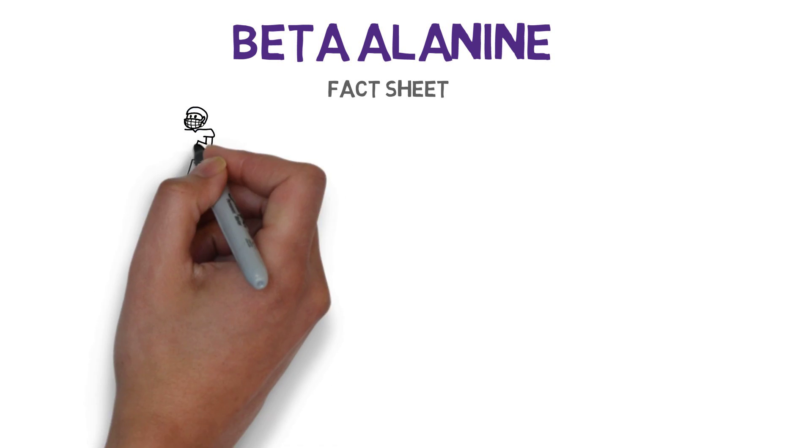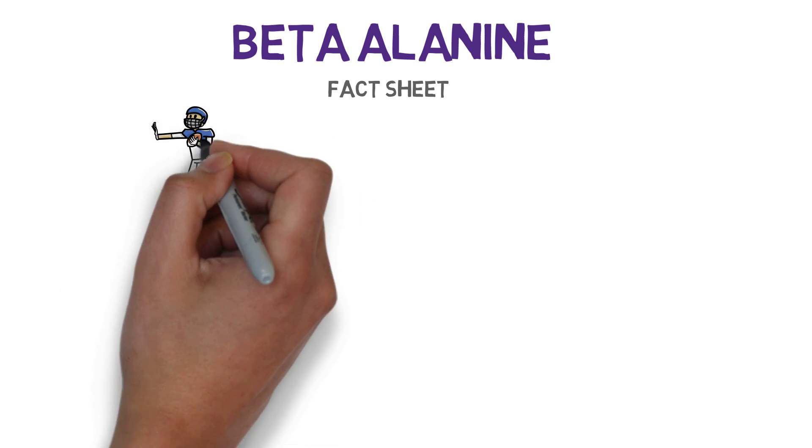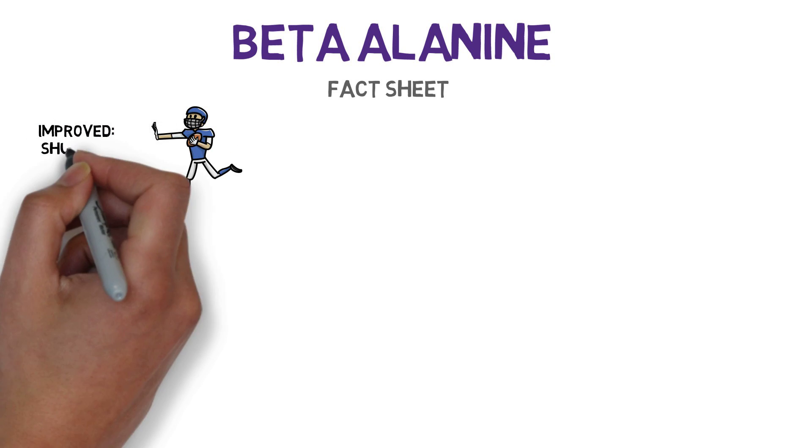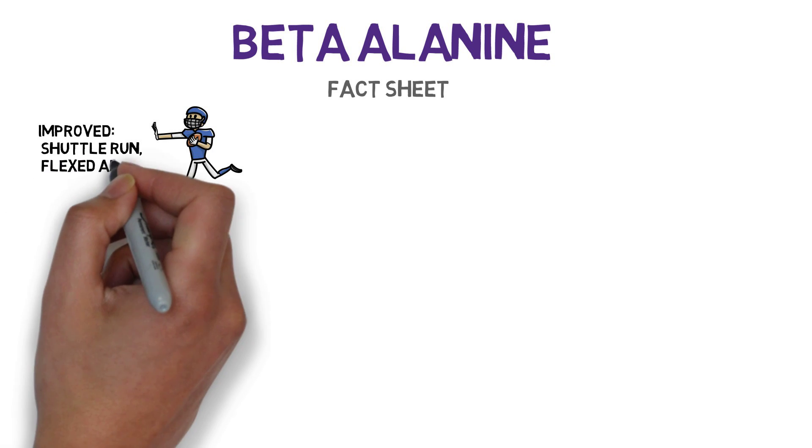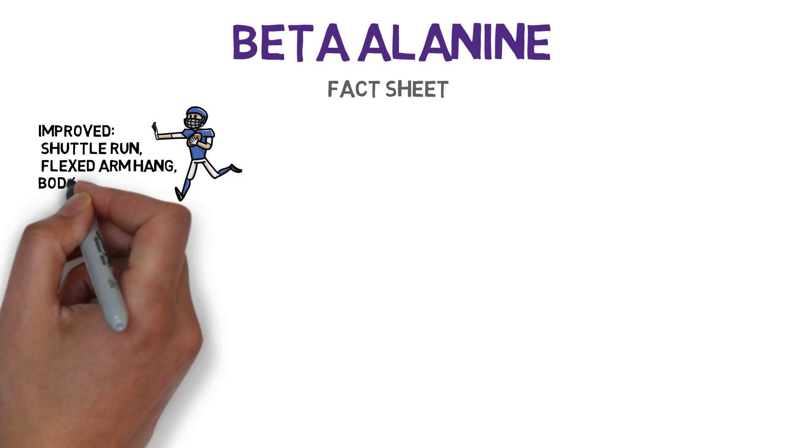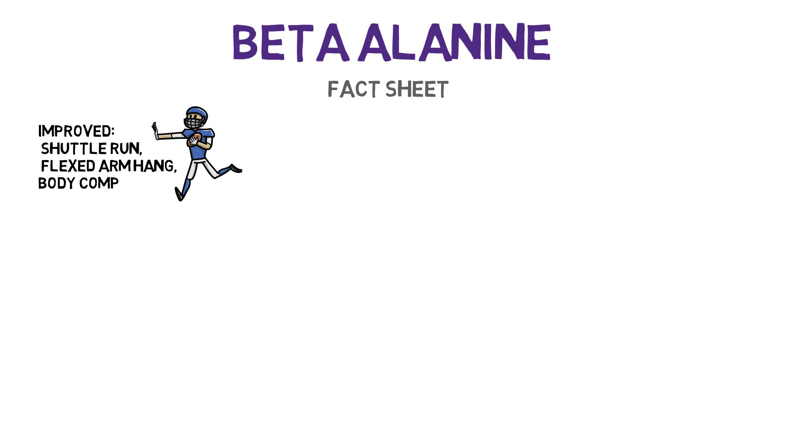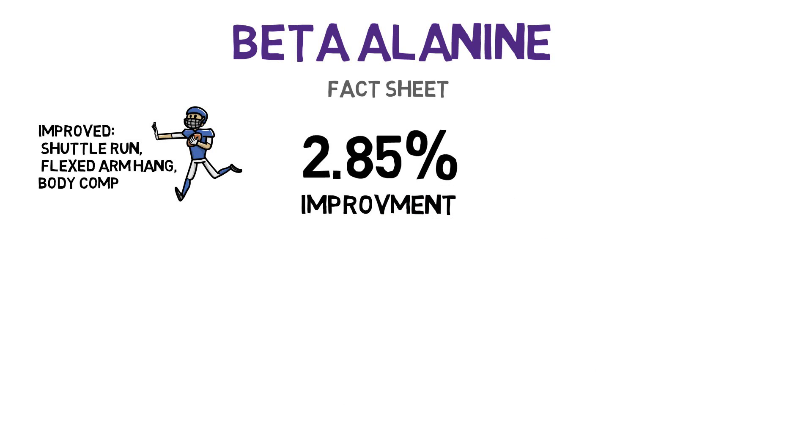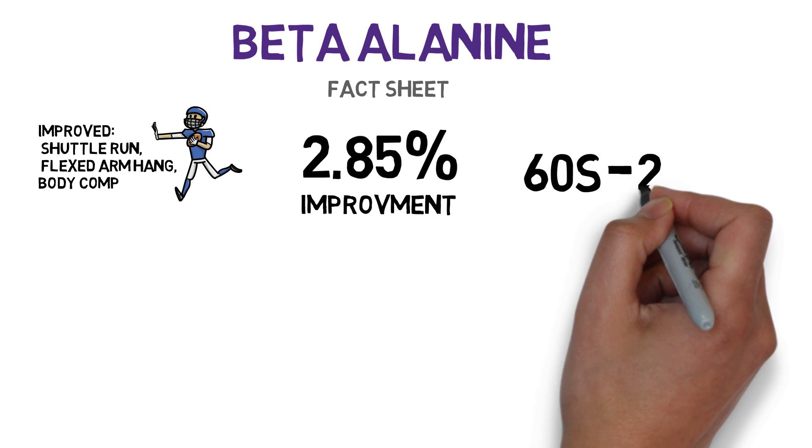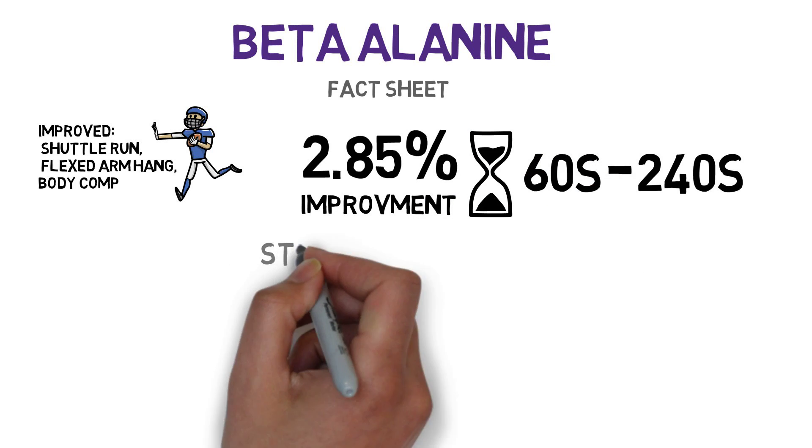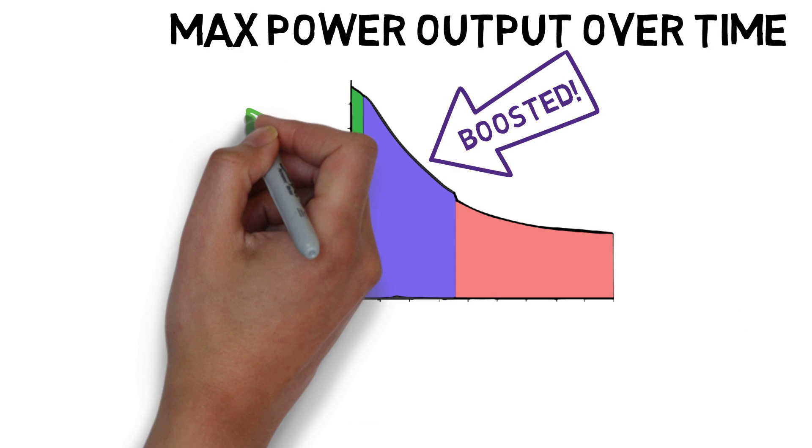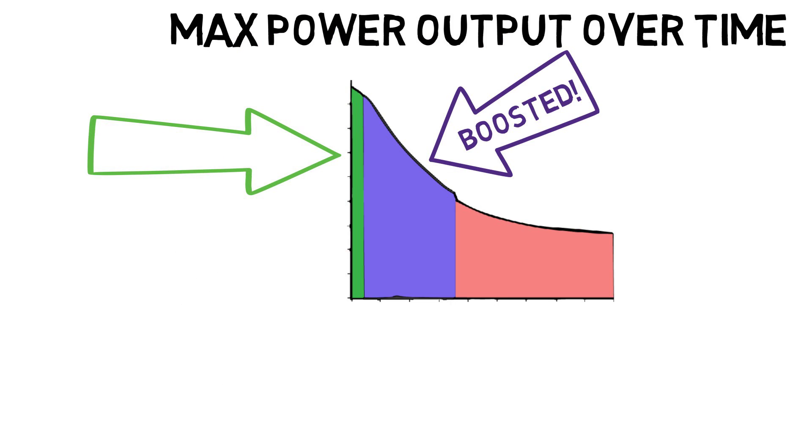Beta-alanine also improves moderate to high-intensity cardiovascular exercise performance like rowing or sprinting. In football players, 4 grams a day improved performance on the shuttle run, flexed arm hang, and their body composition. There is one heavily referenced meta-analysis in which athletes saw a 2.85% boost when training between 60 seconds and 240 seconds, and the benefit continued even after 240 seconds to a lesser degree. And since most people train in multiple sets, the faster the lactic acid is cleared, the less time you'll need to rest between sets.